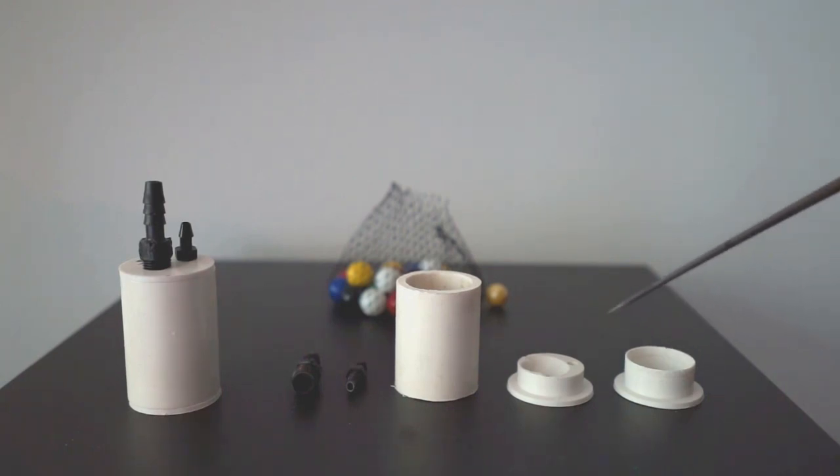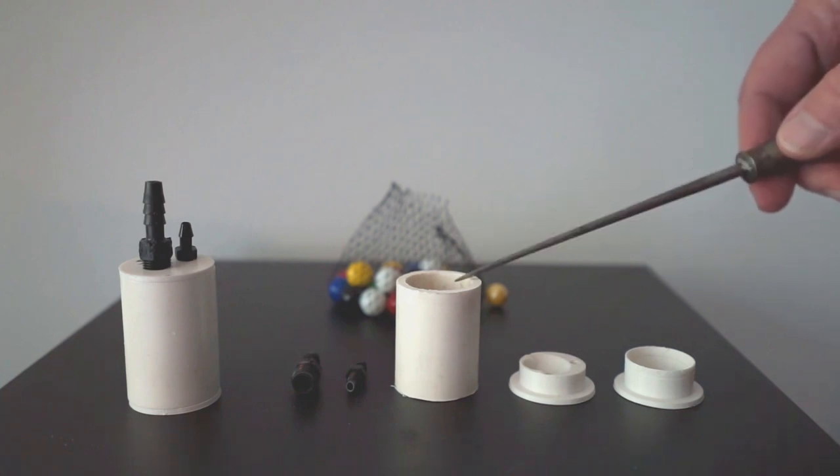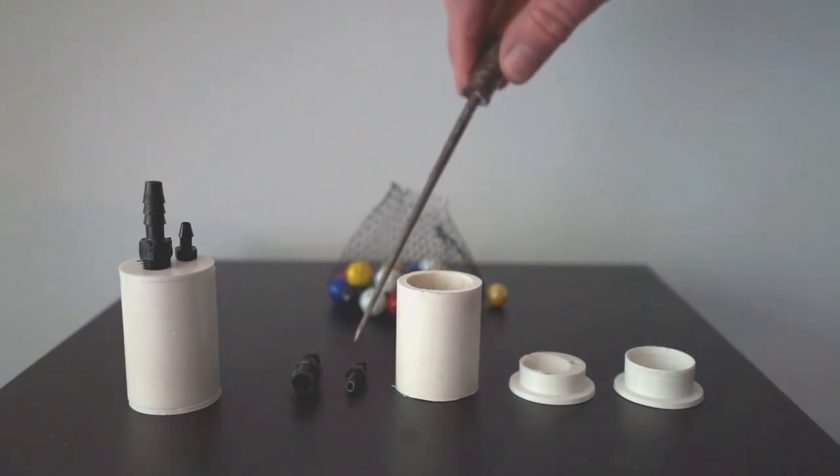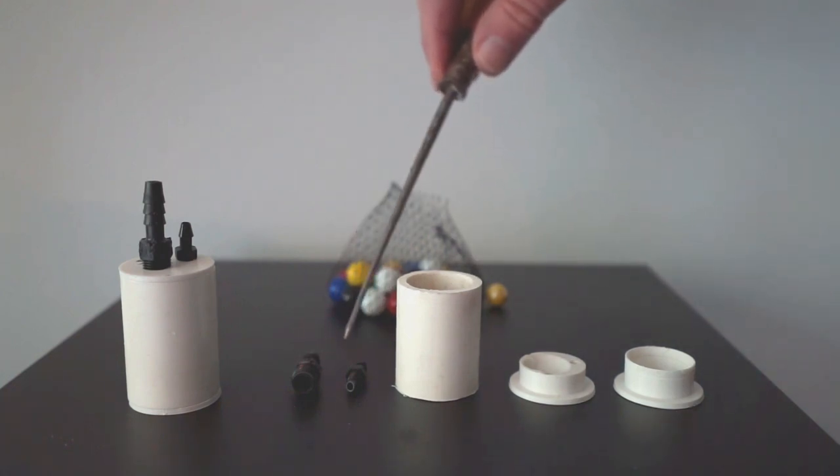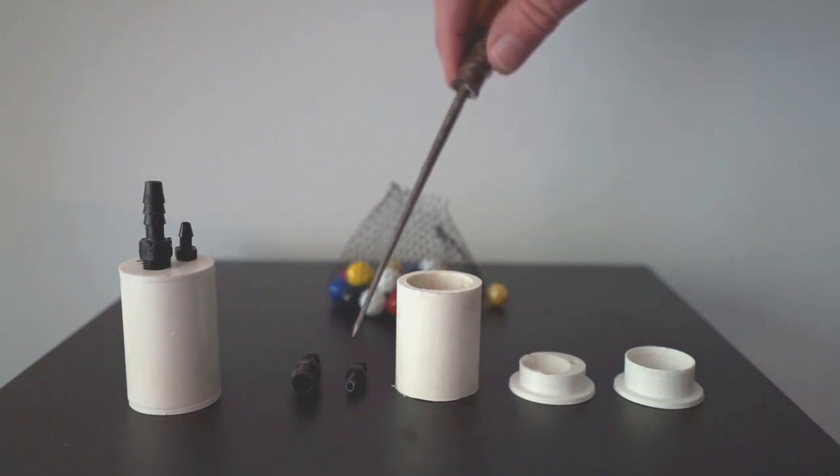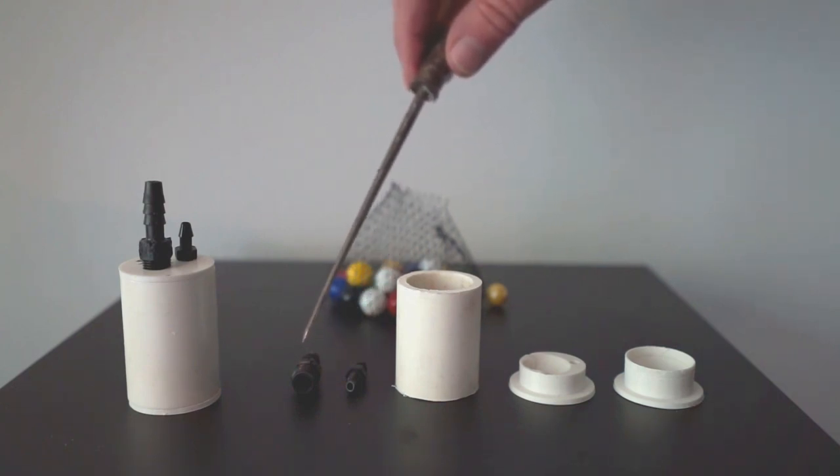There's a bottom piece that's 3D printed, a top piece that's 3D printed, and a 1 inch PVC pipe. I use two different sizes of barbed fittings - one for the inlet air and one for the outlet water.